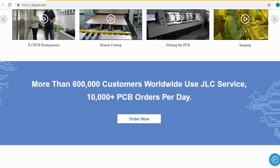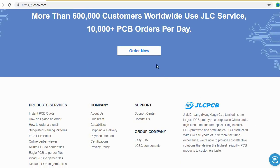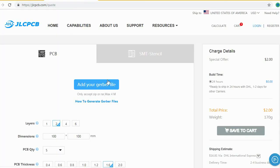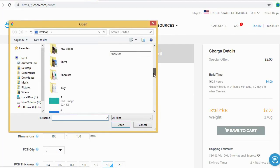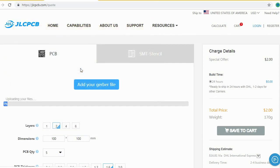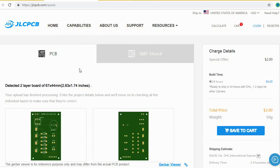Ordering PCBs with JLCPCB is very easy and simple. You should just create your Gerber file and upload it to JLCPCB. Here you can order your high-quality PCB at a very cheap price, just $2.